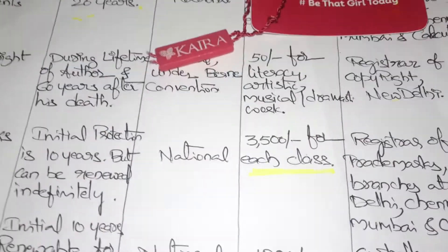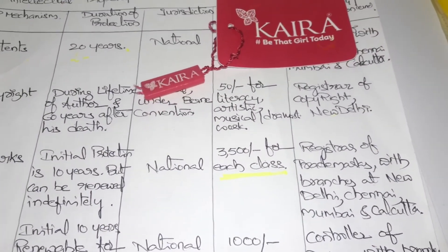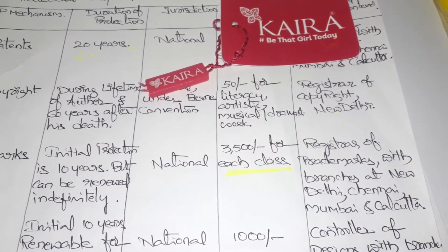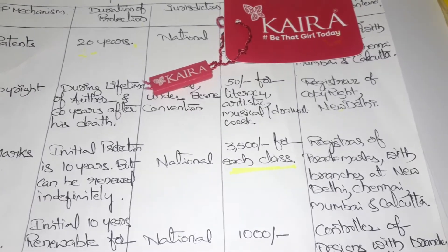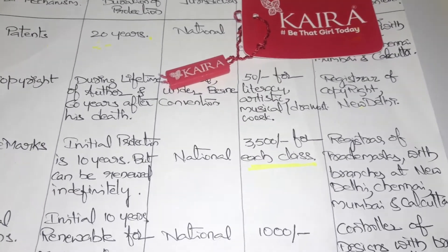The authority for trademarks is the Registrar of Trademarks, with branches in New Delhi, Chennai, Mumbai, and Kolkata, where you can apply for trademark registration.